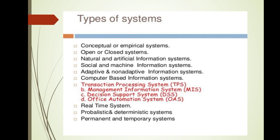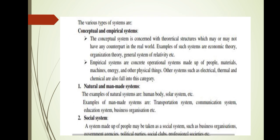A conceptual system is concerned with theoretical structures which may or may not have any counterpart in the real world. Examples include economic theory, organization theory, and general systems of relativity. An empirical system concentrates on operational systems made up of people, materials, machines, energy and other physical things. Examples such as electrical, thermal, and chemical systems also fall in this category.